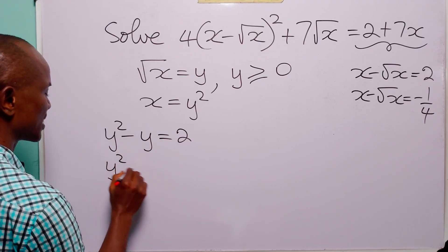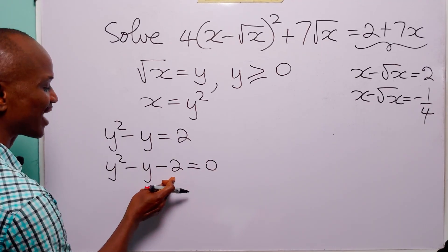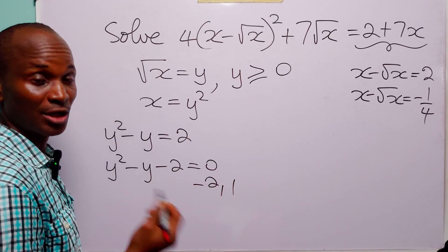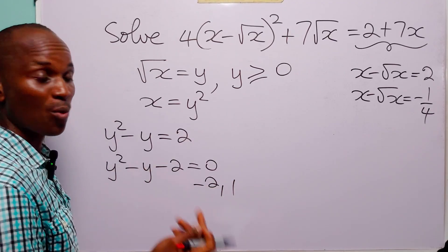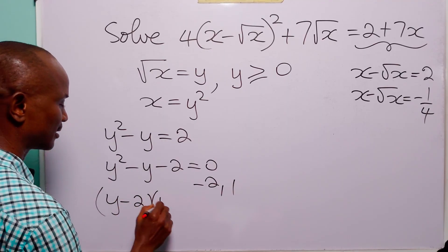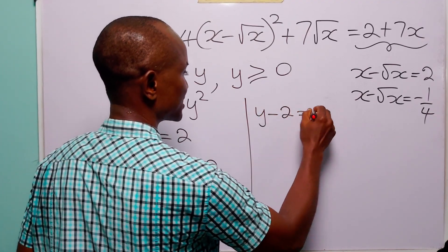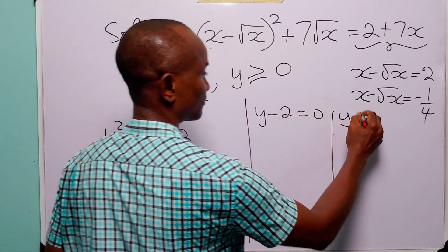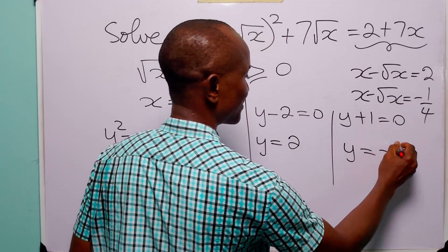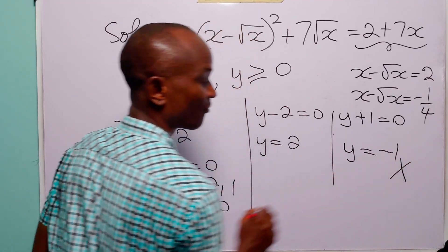Rearranging this equation, we have y squared minus y minus 2 is equal to 0. We can factorize this equation. All we have to do is find the factors of minus 2 that add up to minus 1, and they are going to be minus 2 and 1, because minus 2 times 1 gives us minus 2, while minus 2 plus 1 gives us minus 1. So, here we have y minus 2 and y plus 1 is equal to 0. From here, we have that either y minus 2 is equal to 0, or y plus 1 is equal to 0. From here, y is equal to 2, and from here y is equal to minus 1. But let us remember that y must be greater than or equal to 0, so this value of y is not acceptable.